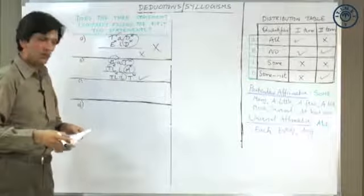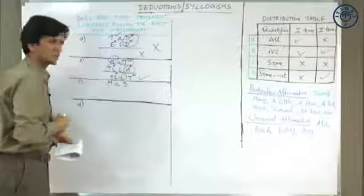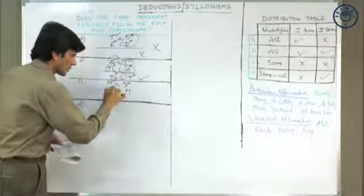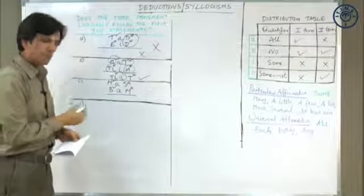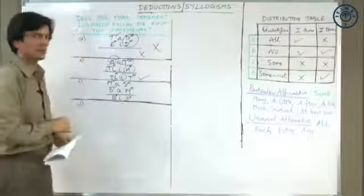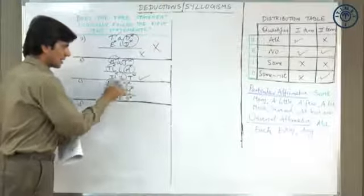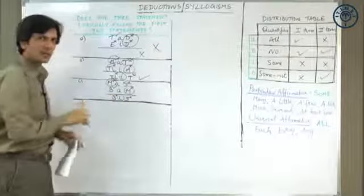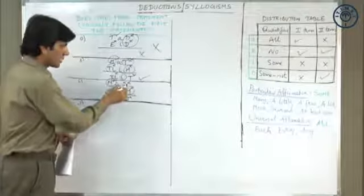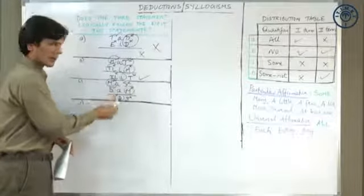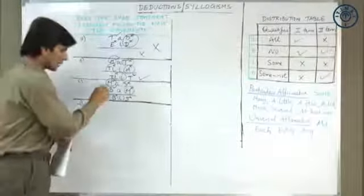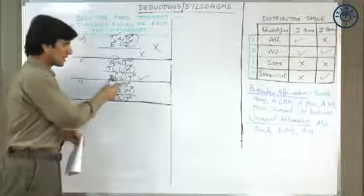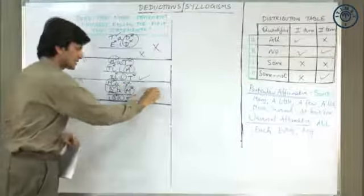Part C: all muddy shores are swamps — distributed, not distributed. All beaches are muddy shores — distributed, not distributed. The conclusion is some beaches are swamps — both not distributed. Middle term M is distributed in at least one premise. Both premises are universal affirmative, from which we can also derive particular affirmative. Term S is not distributed in the premise, so it cannot be distributed in the conclusion — and both terms in the conclusion are not distributed, so there is no problem. Rule 7 only concerns terms not distributed in premises. Hence this is a valid conclusion.